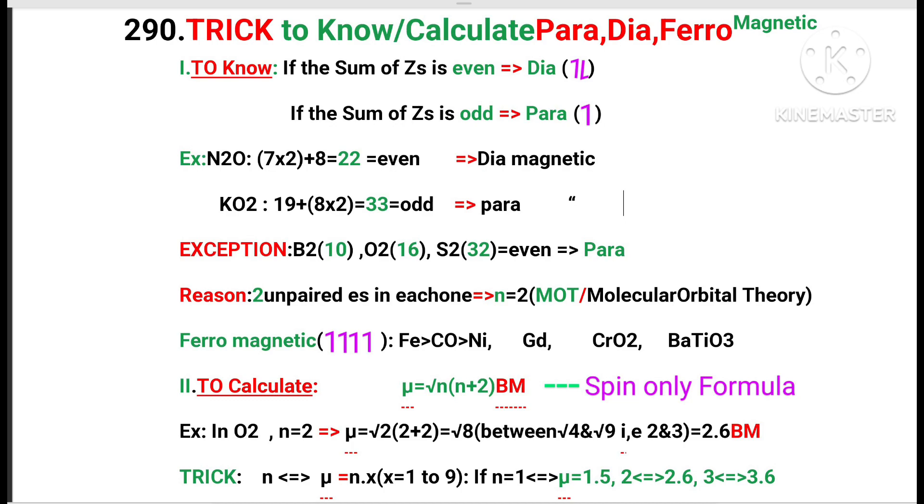Number 1: To know, if the sum of Z's, that is atomic numbers, is even, then the substance is diamagnetic where all the electrons are paired. If the sum of Z's is odd, then the substance is paramagnetic, where the substance contains at least one unpaired electron.